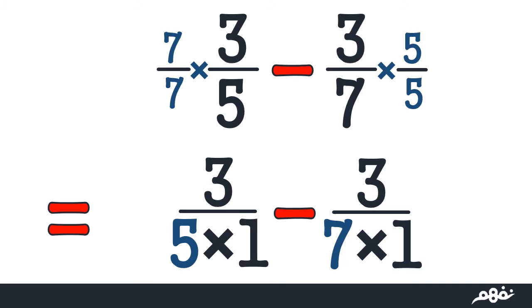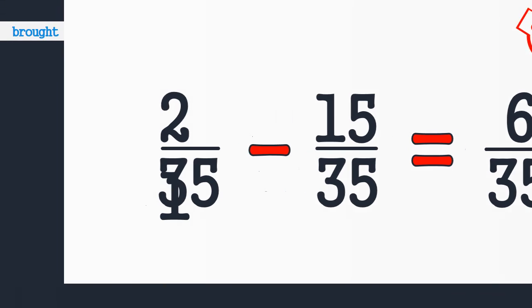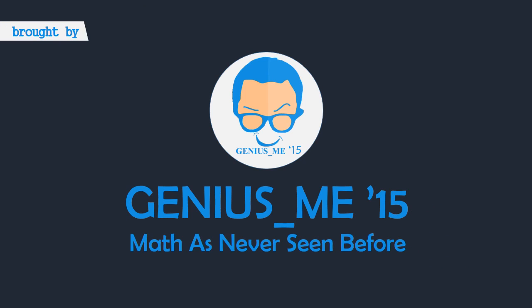This gives us 21 over 35 minus 15 over 35, which equals 6 over 30. That was case 3. We reached the end of our lesson, so stay tuned and wait for us.